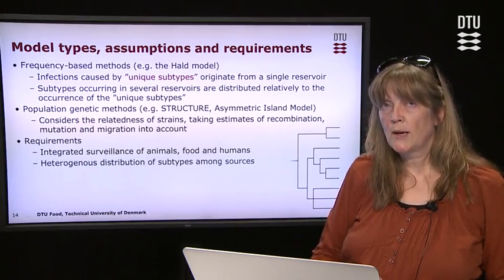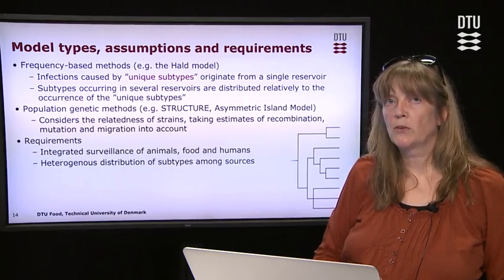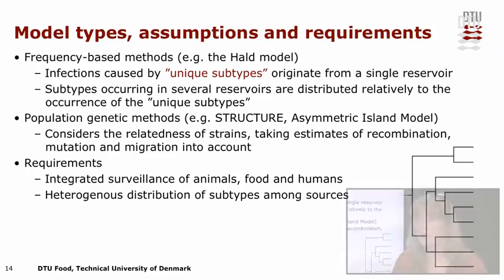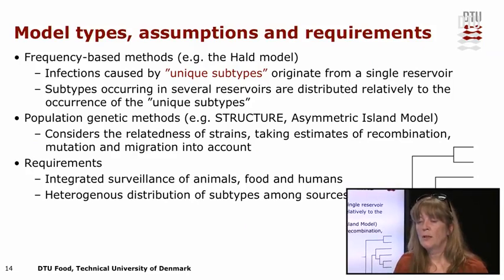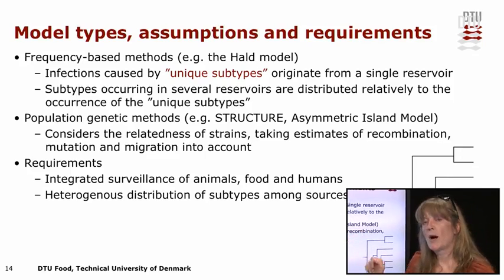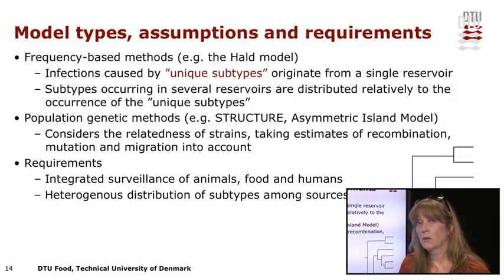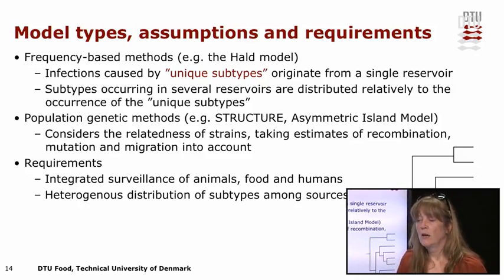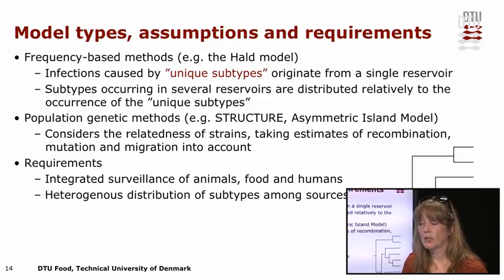There are two model types available. One is called frequency-based methods, which use the principles just described by identifying unique subtypes and then proportionally distributing the other serotypes relative to these. Another family of models are called population genetic models, exemplified by STRUCTURE and the asymmetric island model. These require molecular rather than phenotypic subtyping methods, because they consider the relatedness of strains by taking into account recombination, mutation, and migration.